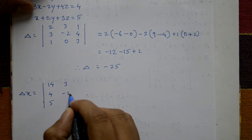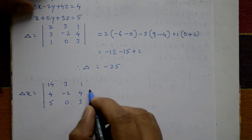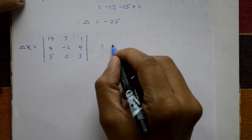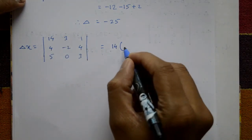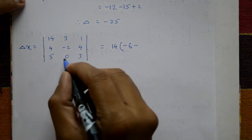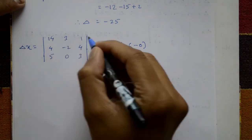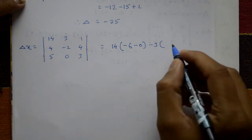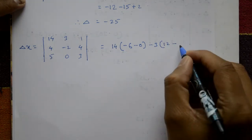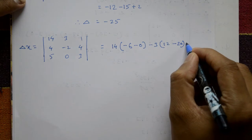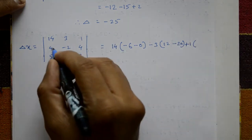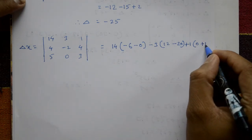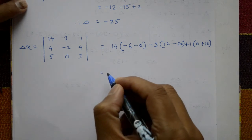Now expand this determinant. 14 times the minor: minus 2 times 3 is minus 6, minus 0, giving minus 6. Then minus 3 times the minor: 4 times 3 is 12, minus 5 times 4 is 20, giving minus 8. Then plus 1 times the minor: 5 times 0 minus 5 times 2 is minus 10, giving plus 10.